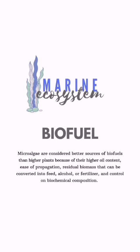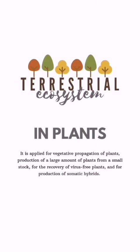Now let's move on to the terrestrial ecosystem, which is the last type of ecosystem we'll cover. Biotechnology is important for plants in terrestrial ecosystems. Plant tissue culture is a general term for different techniques such as cell culture, seed tissue culture, anther and pollen culture, plant organ culture, and tissue culture. These have important roles in biodiversity conservation.